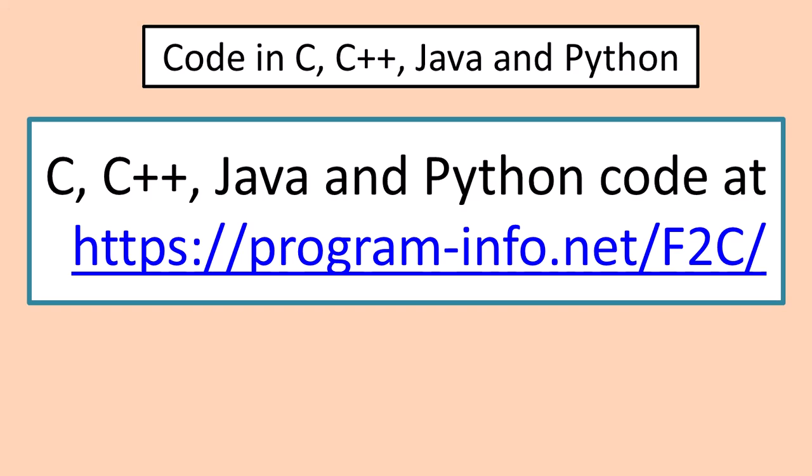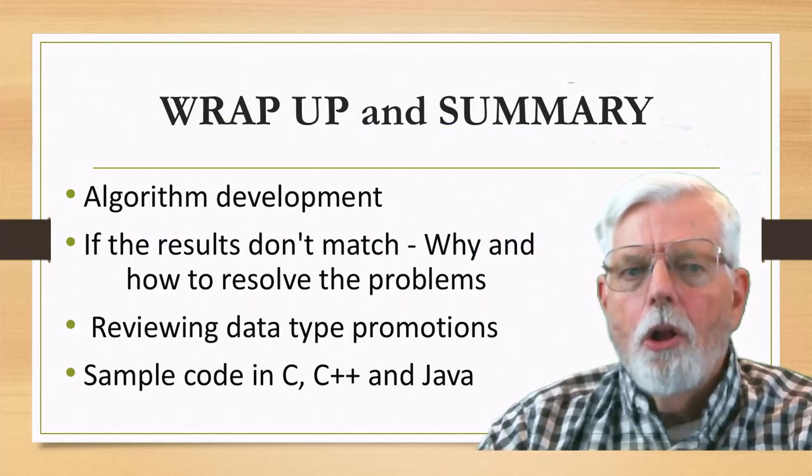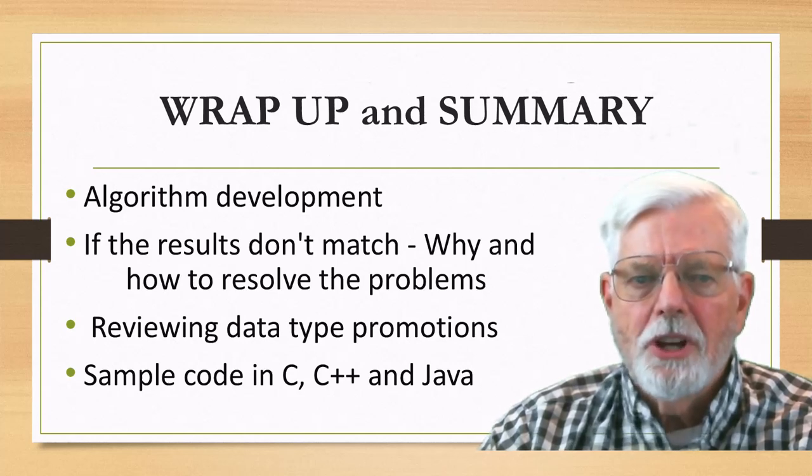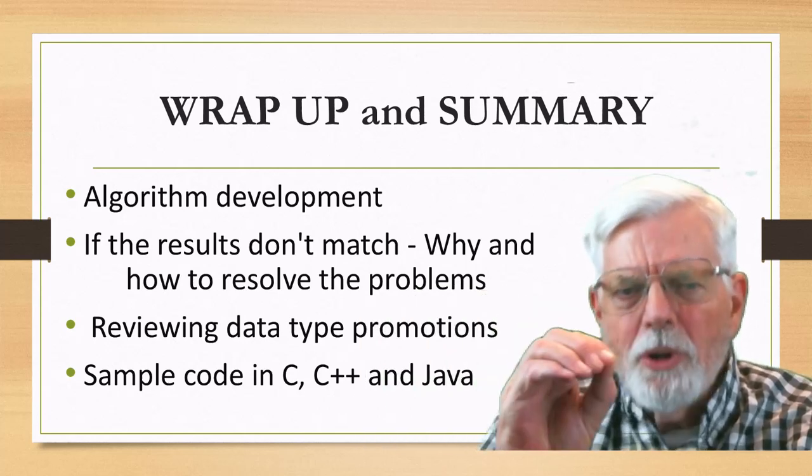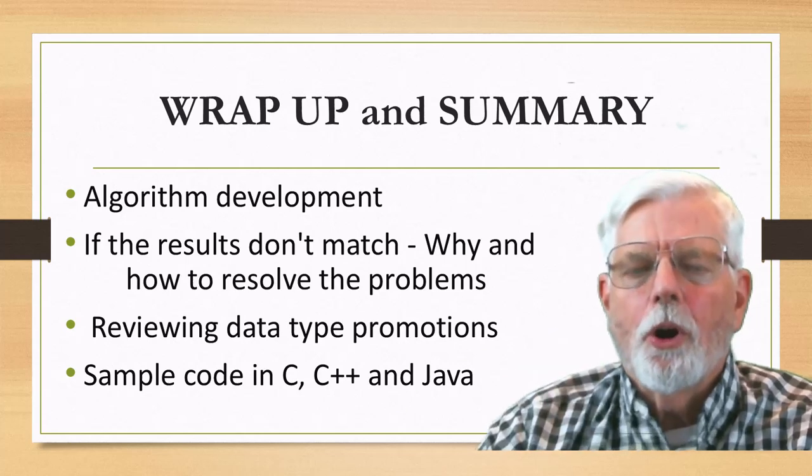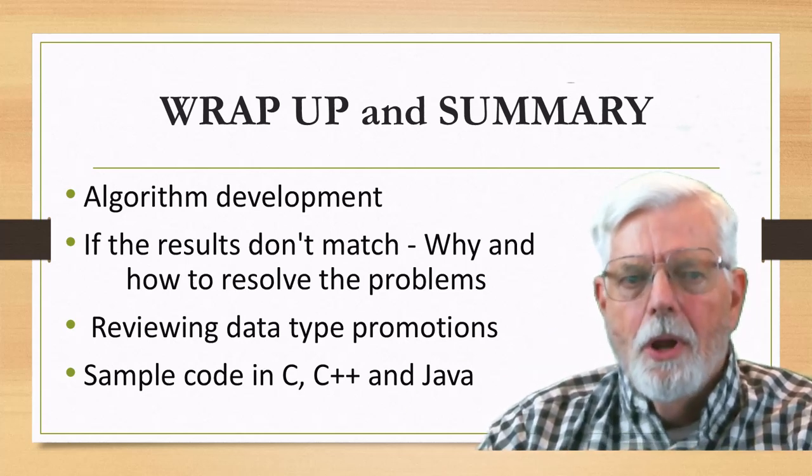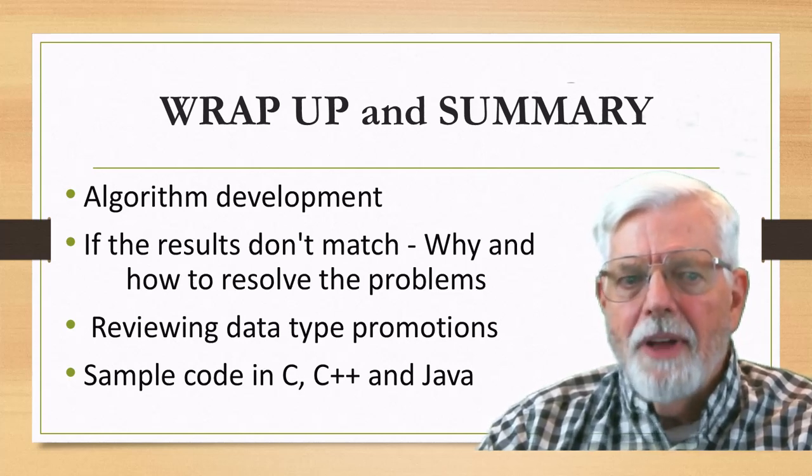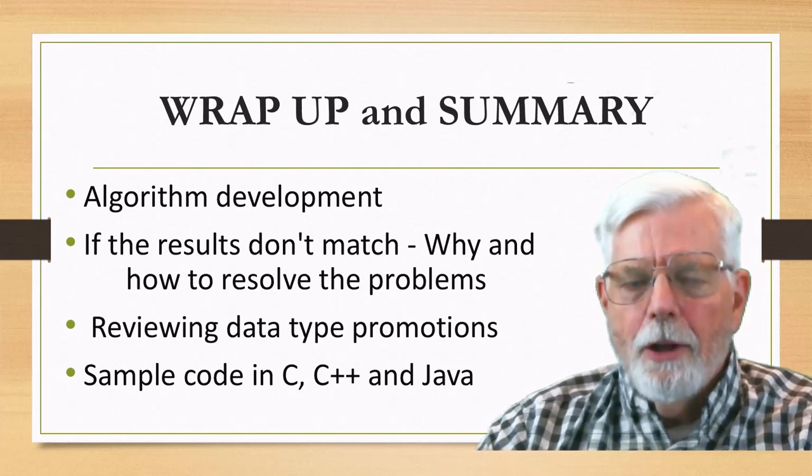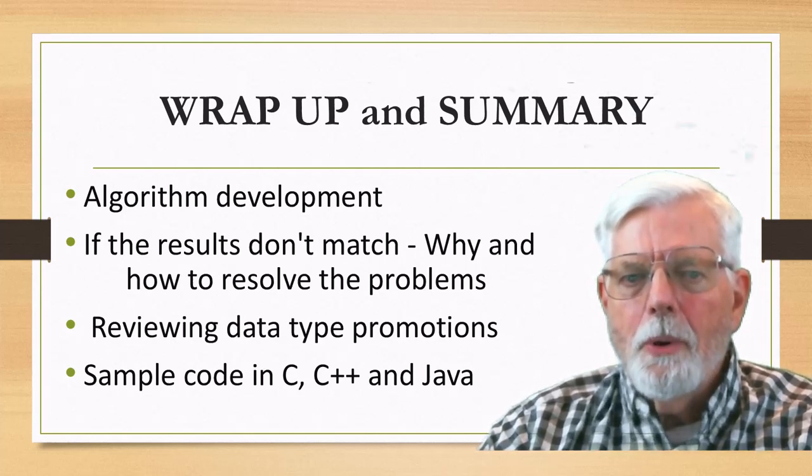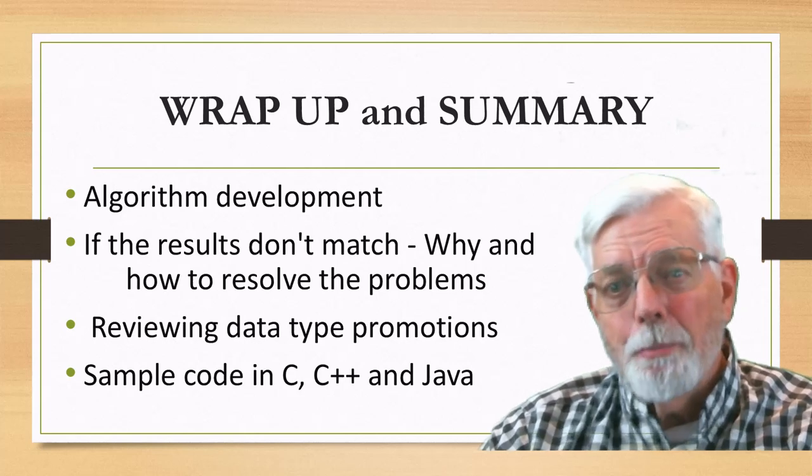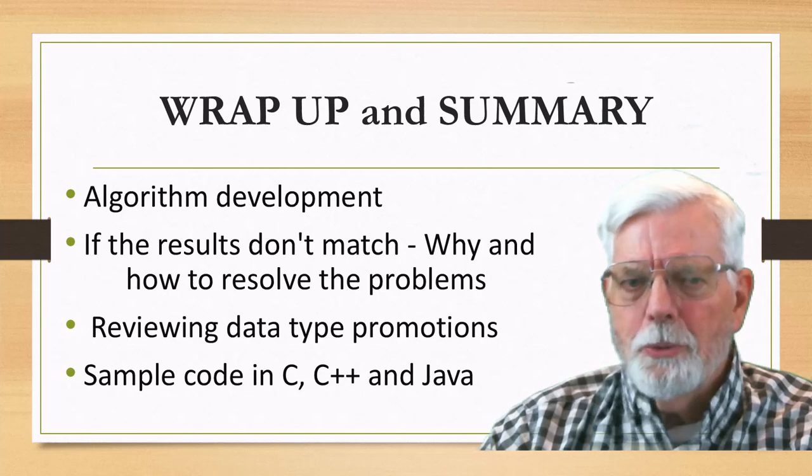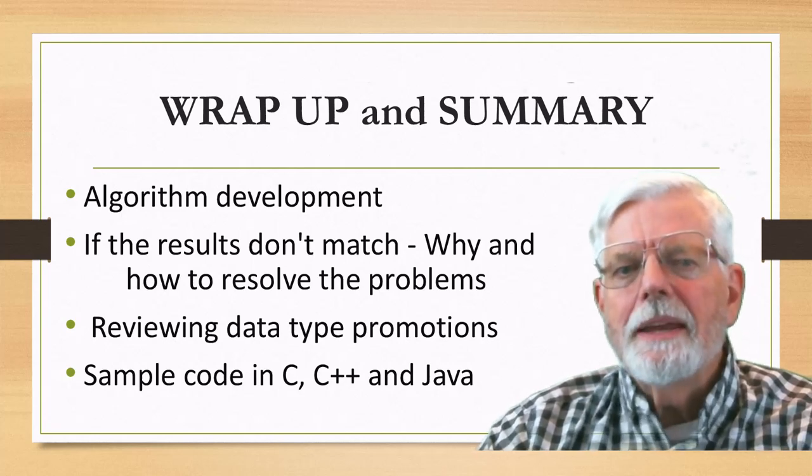Although example code for converting between Fahrenheit and Celsius was used in the discussion, the important things covered were how the algorithm was developed, computing several values with the calculator to be used as expected values before running the program, converting the algorithm into code, running the program and verifying that the expected values match the actual values, fixing the program so that it produces correct results, and reviewing data type promotions.